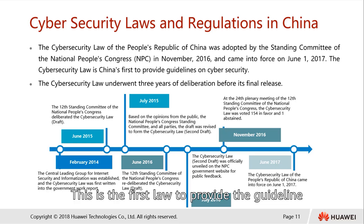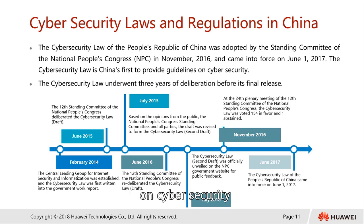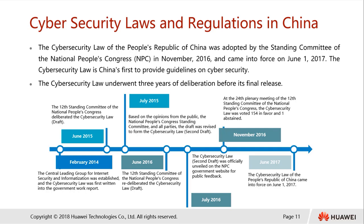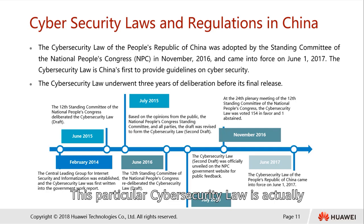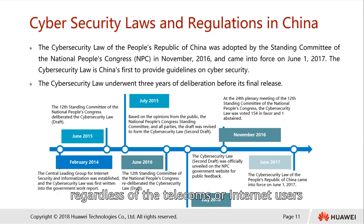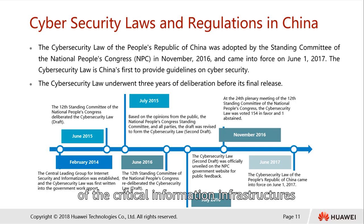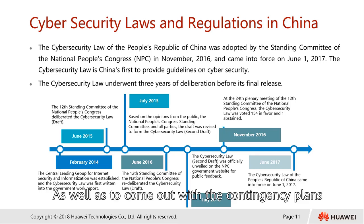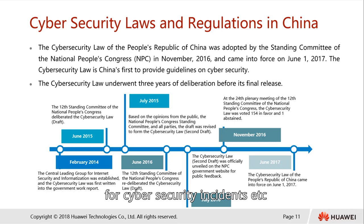This is the first law to provide guidelines on cybersecurity. The roadmap of the cybersecurity law is meant for implementing regulations on personal information protections for telecoms or internet users, standardizing the handling of critical information infrastructures, and coming up with contingency plans for cybersecurity incidents.